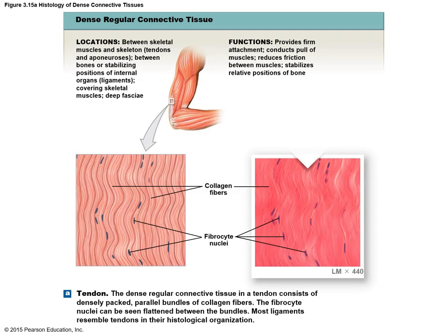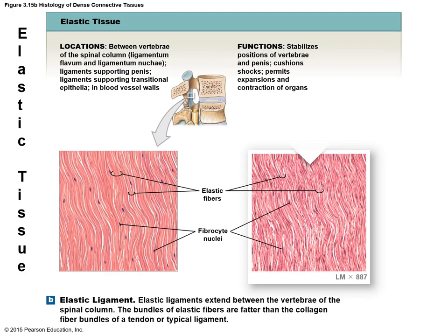This figure shows the histology of dense regular connective tissue. Elastic connective tissue is present between the vertebrae — the units of the vertebral column — or in the ligaments supporting the penis. Its function is stabilization and it also has a cushioning effect.